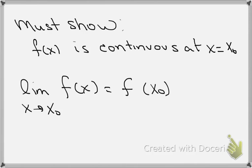And what we must show is that f of x is continuous at x equals x naught. By the definition of continuity, that means the limit as x approaches x naught of f of x has to equal f of x naught. So now we know what's given and this is what we must show.